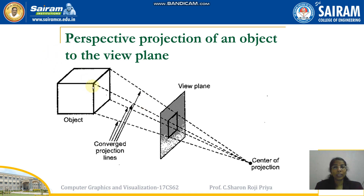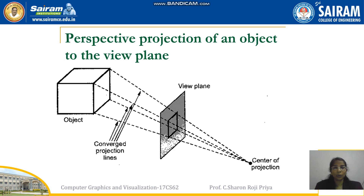Projection lines are straight lines drawn from each vertex of the object through the view plane to the camera center. Since the distance between camera and the object is finite in perspective projection, all the projection lines converge at the camera center, and this point is called the center of projection, or COP.